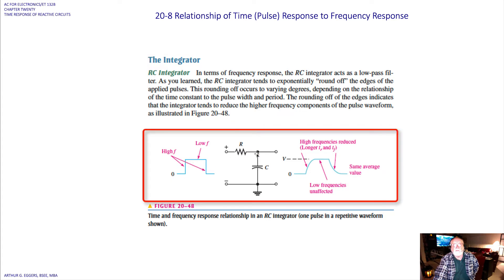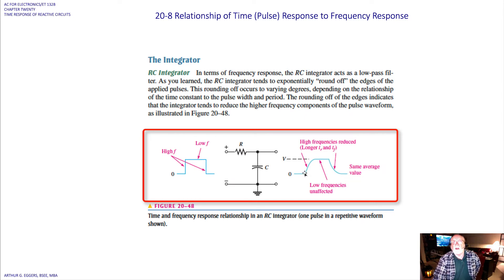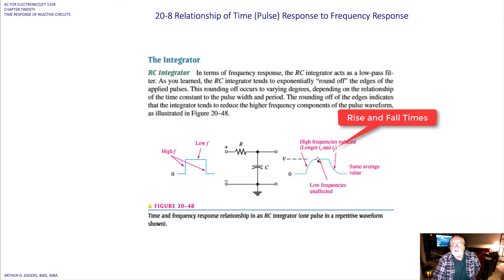Looking at the waveform for the RC integrator — time and frequency response relationship with one pulse in a repetitive waveform — the leading and trailing edges of the waveform have the high frequency components, while the flat top portion has the low frequency components. On the output, you can see the high frequencies are reduced over a longer time. On the falling edge, where it flattens out, the low frequencies are unaffected.